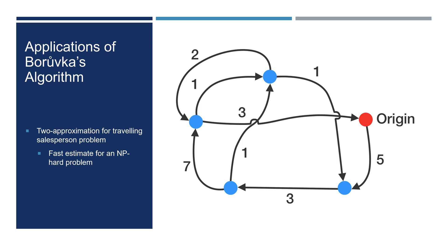Borůvka's algorithm can also be used as a two-approximation for the travelling salesperson problem. This is an NP-hard problem, so it cannot be solved in polynomial time. Borůvka's algorithm computes an estimate that is at most twice the cost of the optimal solution in polynomial time.